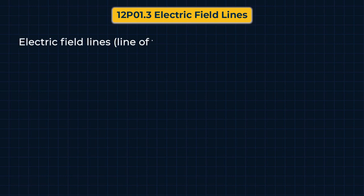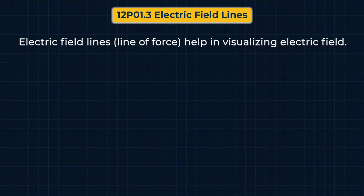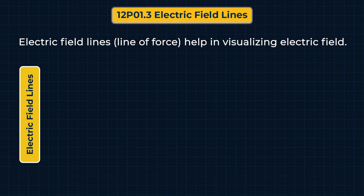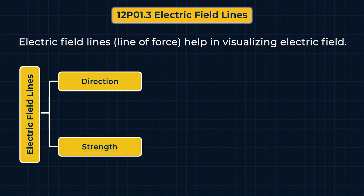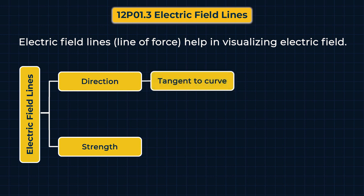Electric field lines are defined as curves that help in visualizing the electric field in any region or at any point. Electric field lines give us mainly two pieces of information. First is the direction of the electric field, and to find direction, we draw a tangent to the field lines — this tangent gives us the direction of the electric field.